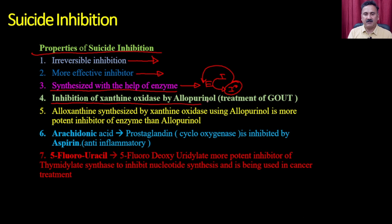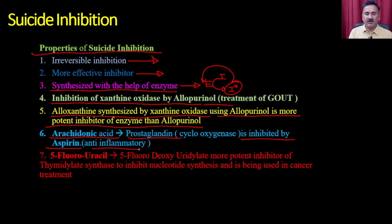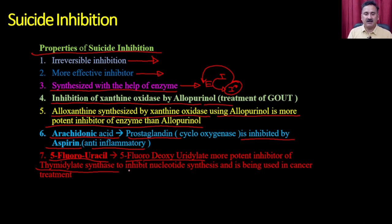Examples include inhibition of xanthine oxidase by allopurinol for gout treatment; alloxanthine synthesized by xanthine oxidase from allopurinol is a more potent inhibitor. Arachidonic acid conversion to prostaglandin catalyzed by cyclooxygenase is inhibited by aspirin, an anti-inflammatory drug. Also, 5-fluorouracil is converted to 5-fluorodeoxyuridine, a potent suicidal inhibitor blocking thymidylate synthesis, nucleotide synthesis, used in cancer treatment.